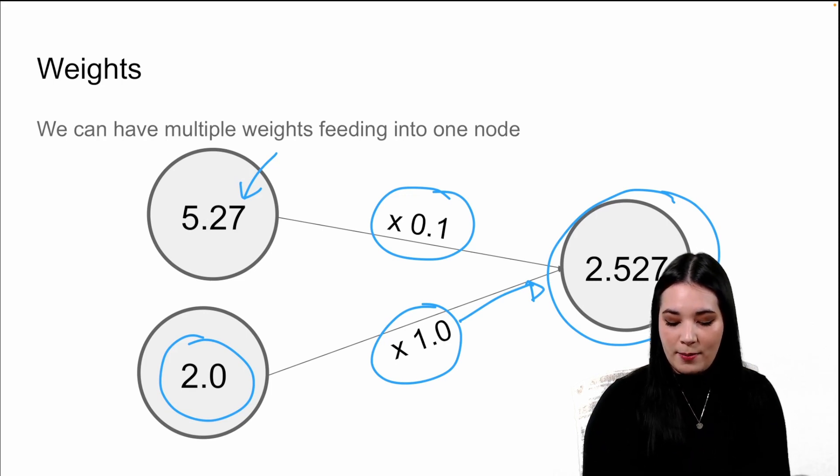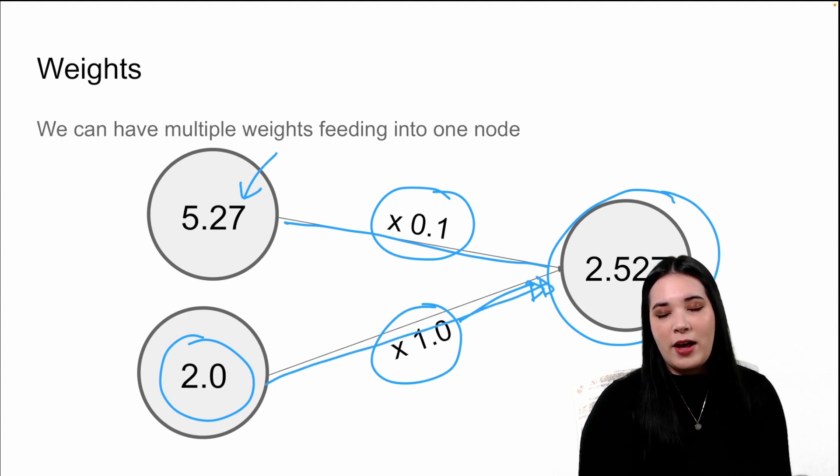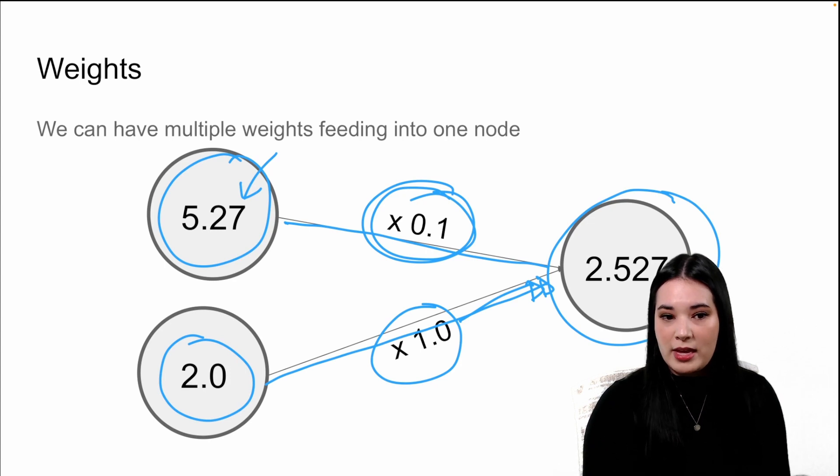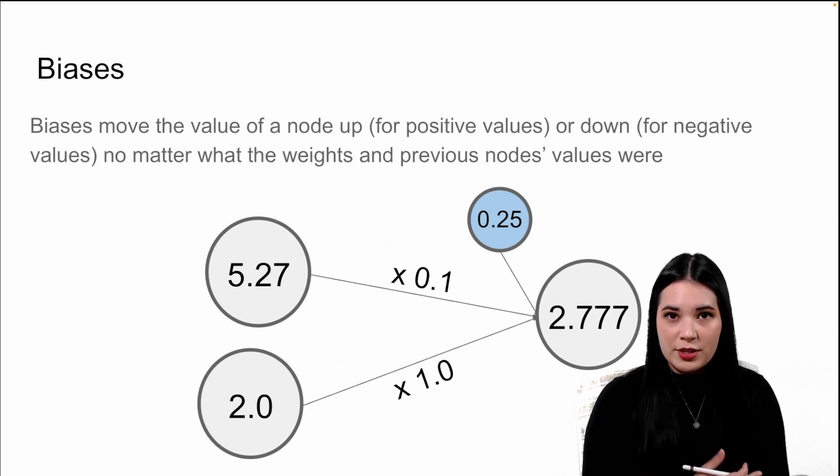It has inputs coming in from this node, and it has inputs coming in from this node. Together, we get the value of this node is 2.527, because we get 0.527 from this node multiplied by this weight, and we get 2 from this node multiplied by this weight.